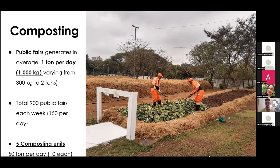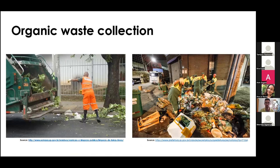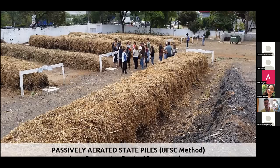The composting unit operates semi-mechanically — partly manual, partly mechanical with a small loader — receiving waste from public markets and street fairs. This represents quite a low percentage of the city's organic waste generation: São Paulo generates around 5,000–6,000 tons of organic waste per day and composts only about 50 tons per day, collected with dedicated organic collection trucks.